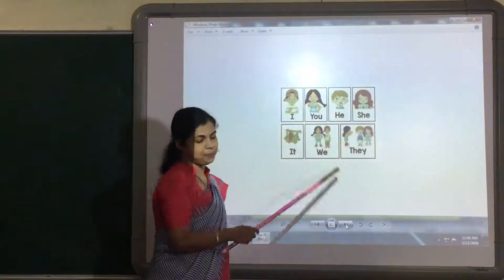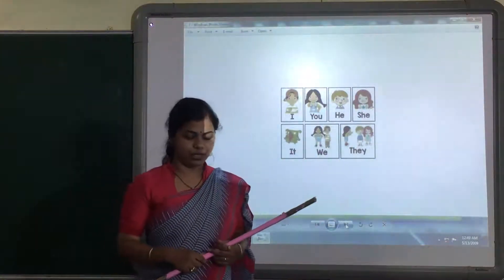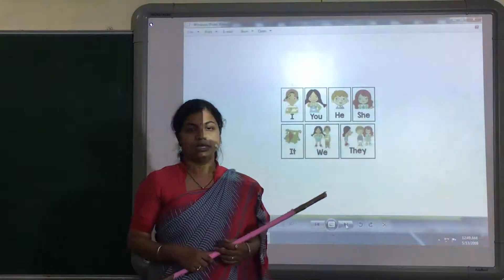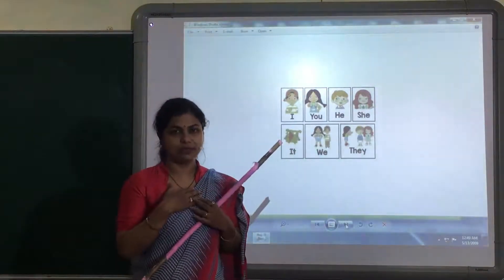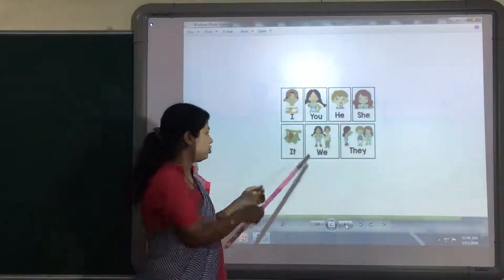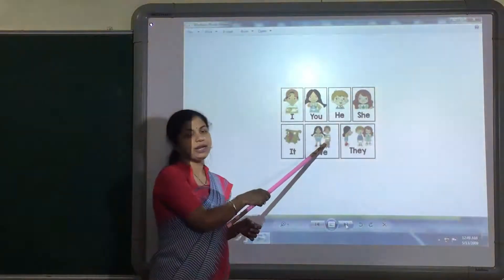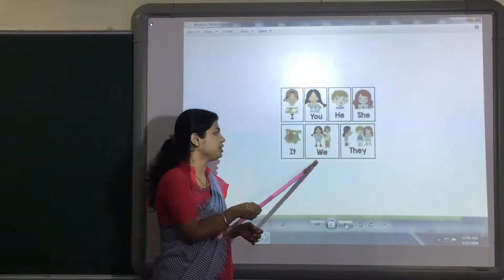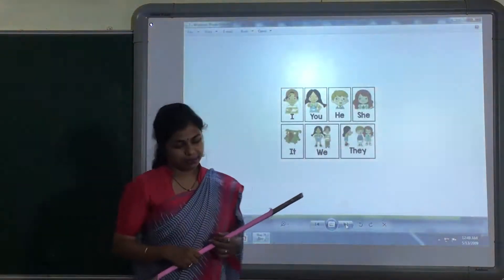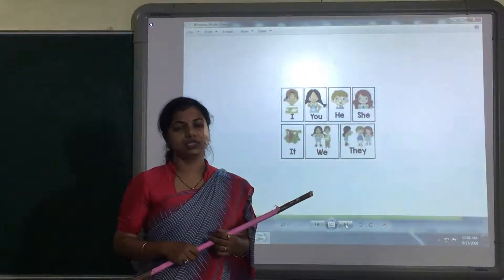Next, we. We use 'we' to talk about a group that includes us. This means whenever we are talking about a group and we are also included in that, we are using 'we' pronoun. For example, we like to see cartoons.